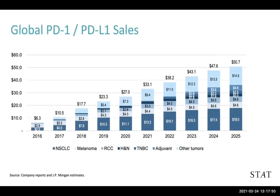This slide from JP Morgan gives you a sense of just how big the existing PD-1 and PD-L1 market is — the numbers are in billions. You can see directionally just how massive this market is, and it shows you the potential if we develop new, more effective checkpoint inhibitors.